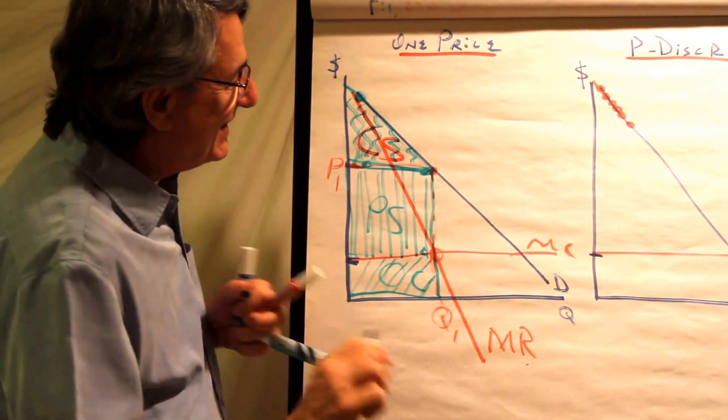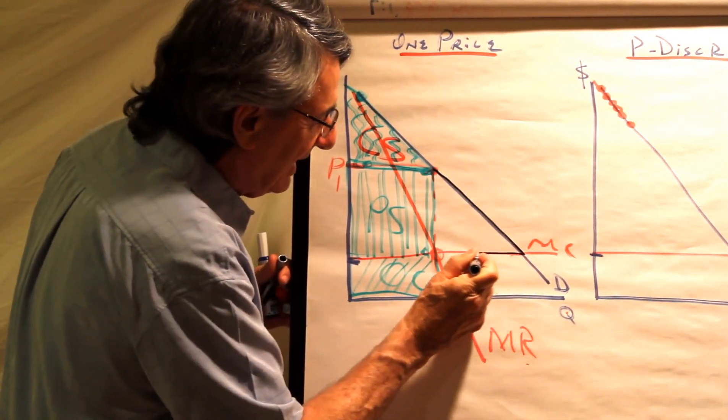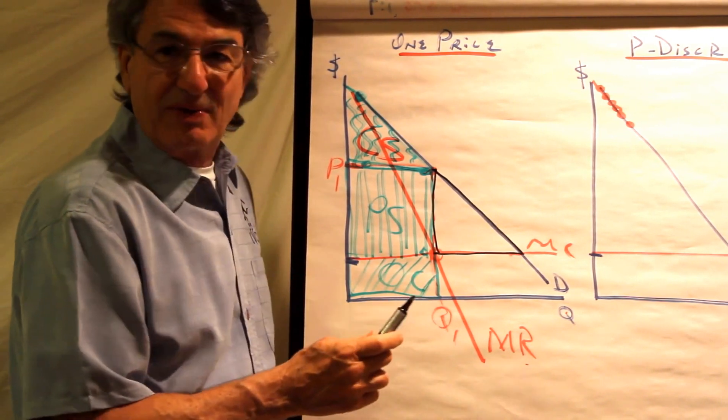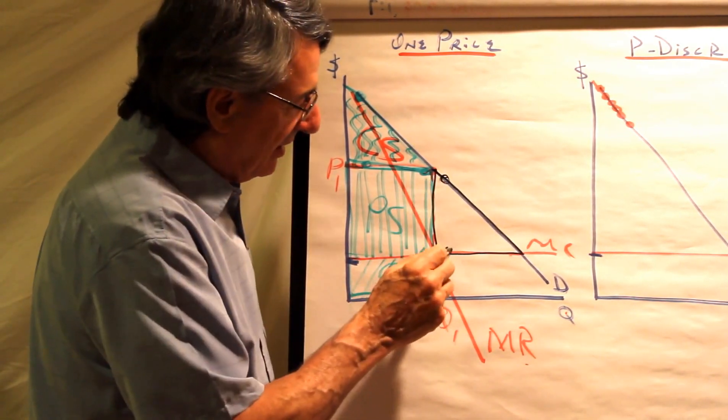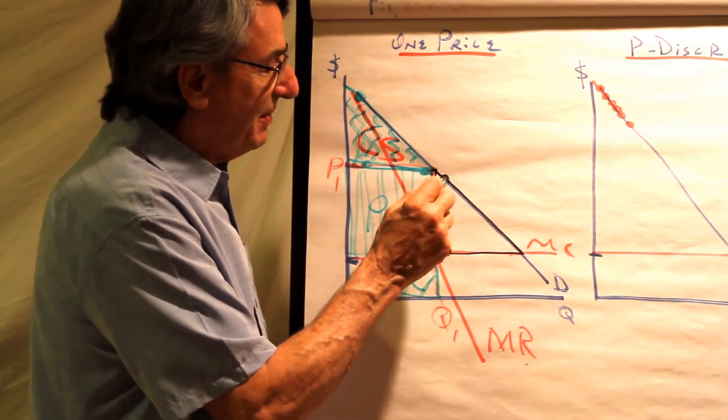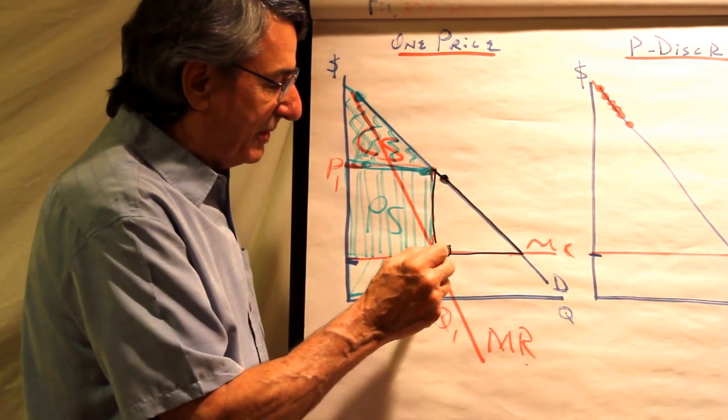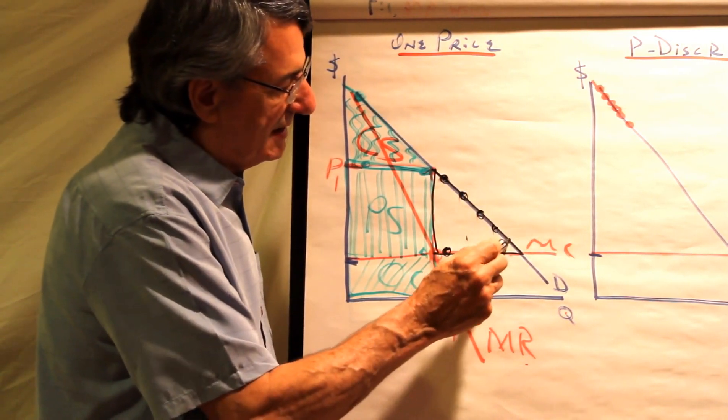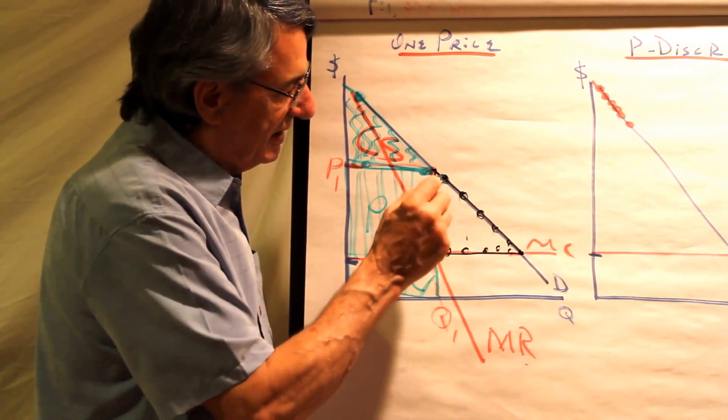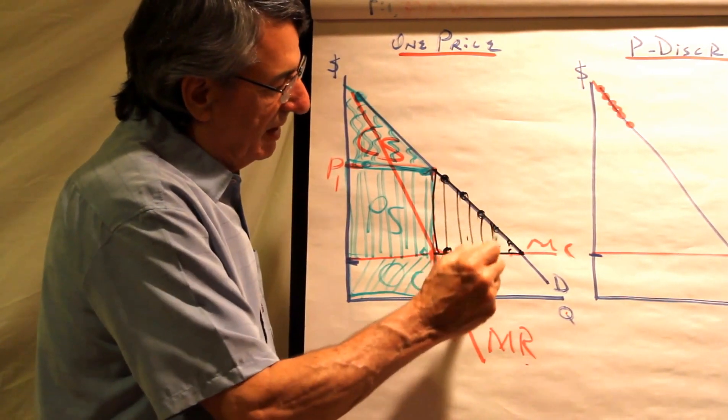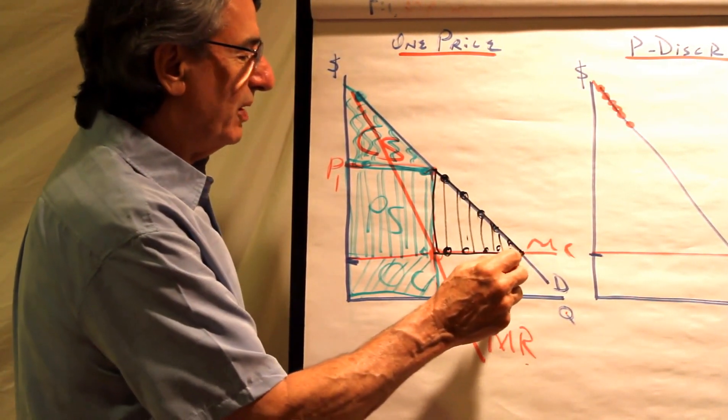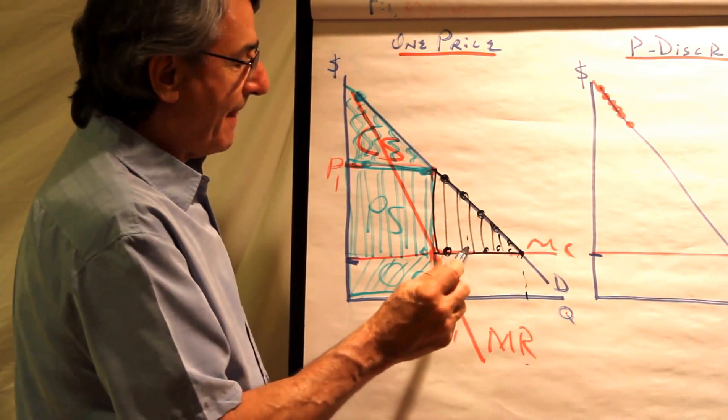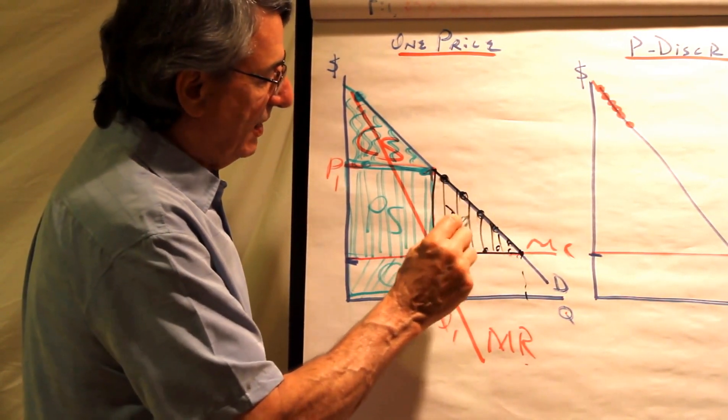Now there's a little missing piece of this puzzle right there. Look at that little triangle. This triangle represents all of the trades that are not done where somebody values it more than the opportunity cost of producing it. All of these are examples of lost wealth because the quantity is restricted from what it would be in a purely competitive environment. And so this is dead weight loss.